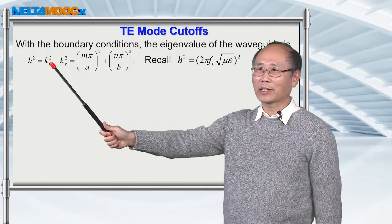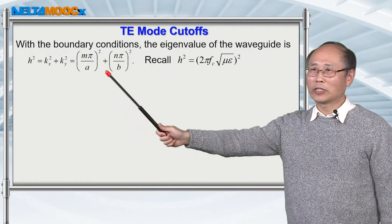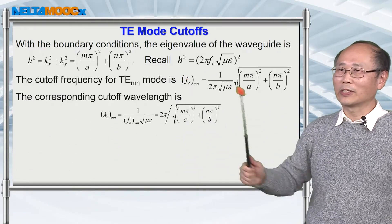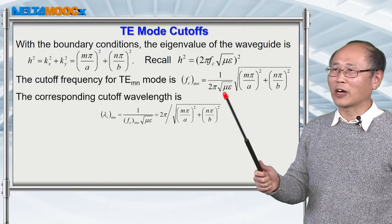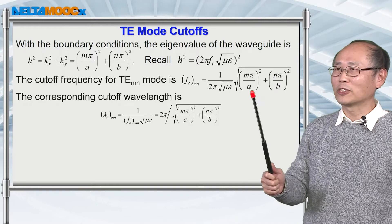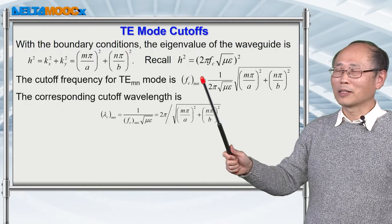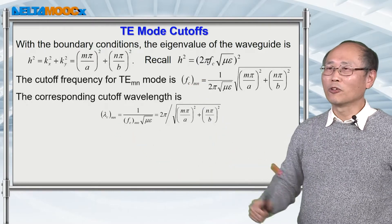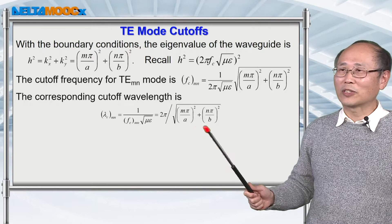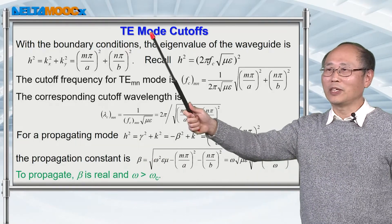Once you figure out kx and ky, you know that the square of the eigenvalue h² equals kx² plus ky², given by this sum. You also know the definition of the cutoff frequency. Similar to the calculation for TMmn mode, you can figure out the cutoff frequency, which depends on the values of m and n and the waveguide dimensions a and b. Setting the cutoff wavelength as the speed of light divided by the cutoff frequency gives the cutoff wavelength expression. The calculations are very similar to those used for the TM mode.